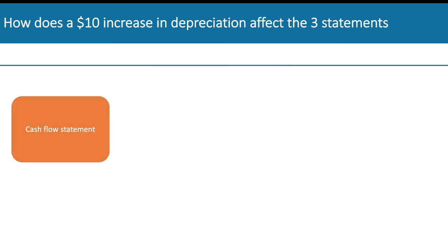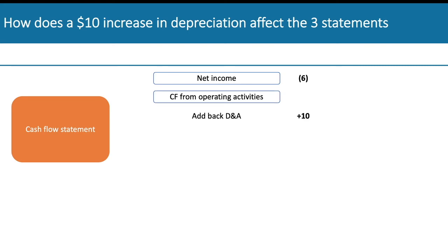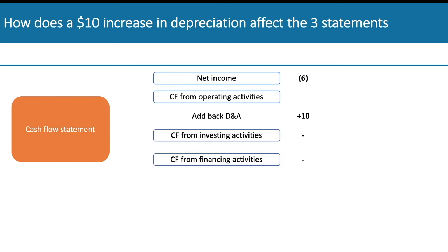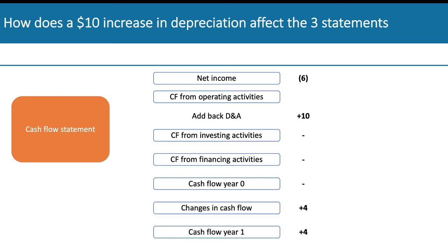We then bring this to the top of the cash flow statement, starting with cash flow from operating activities. Here we add back non-cash expenses, so we add back the depreciation of plus 10. There's no impact on investing activities — such as capex — and no impact on cash flow from financing activities. So the change in cash would be plus four: that's minus six from net income plus 10 added back. The cash flow in year one would also be plus four.